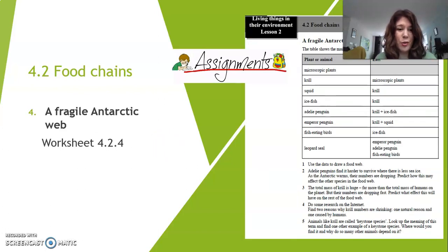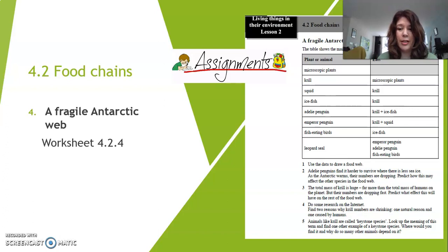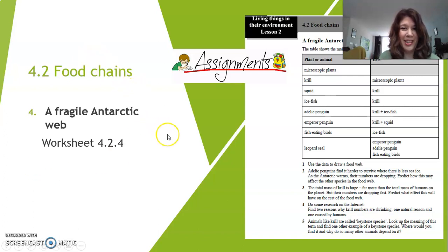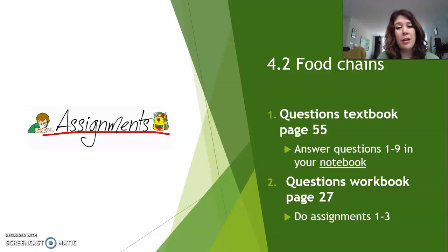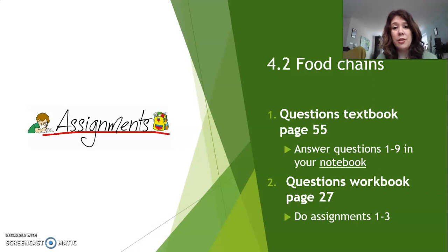Moving on to Worksheet 4.2.4 — here we have a really nice example of a fragile Antarctic web. Go ahead and study that, and now you are going to have to draw your own food web. You don't really have to draw the pictures, just write down the words and make a picture of your creation. And then in your textbook on page 55, you're going to do questions 1 through 9 in your notebook — write them down and make a picture. And in your workbook, you're going to do page 27, assignments 1, 2, and 3. You can start with the workbook first or the textbook first — just go ahead and do that.